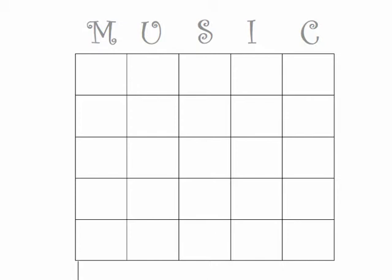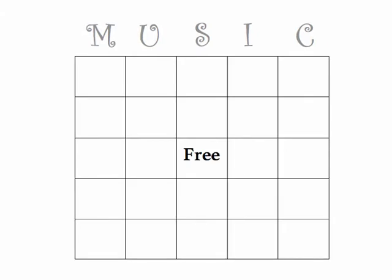The first thing you're going to do is put a free spot on your bingo card. Find the S column, and you're going to go 1, 2, and then you'll get to the free spot, and you write free. Once again, that's 1, 2, free.